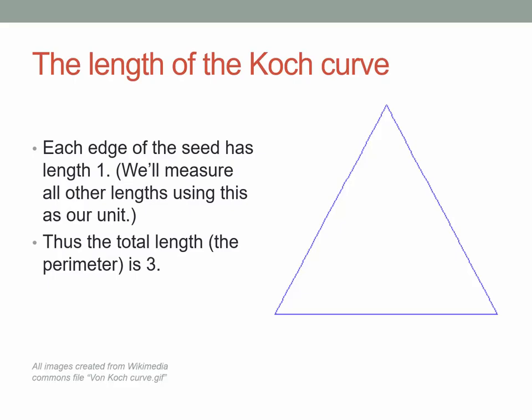Now let's do a little bit of analysis. First, I want to figure out what is the length of the Koch curve. Let's decide that the unit we're using at the beginning is one edge length — each edge has length one, whether that's an inch, a foot, or whatever. The point is it's the unit length. So what's the total length, or the perimeter, of the initial triangle? Well, of course, it's three.